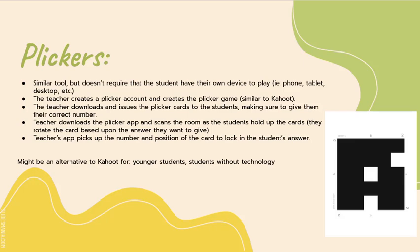With Plickers, students don't have to have their own device. They use these cards, which you can see on the screen here. The teacher creates a Plicker account online, creates their Plicker game similarly to how they would a Kahoot, then downloads and issues out these Plicker cards. Notice on the Plicker card there is a number in the corner — for example, number two. I would assign Jane number two, so Jane always has the number two Plicker card. Also notice there are letters on each end of the card: A, B, C, and D.